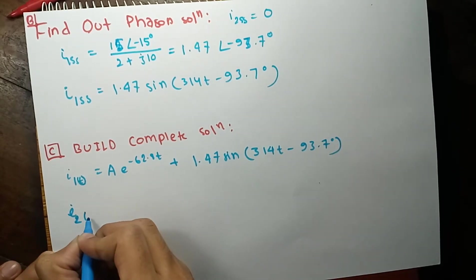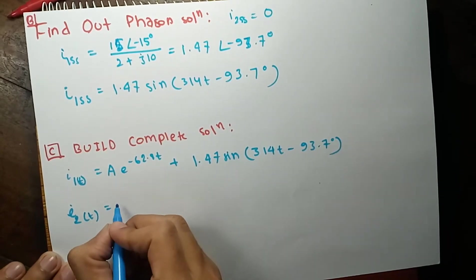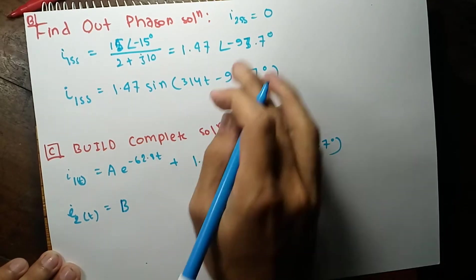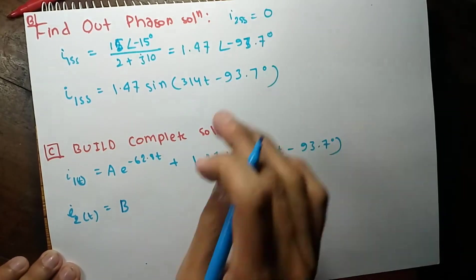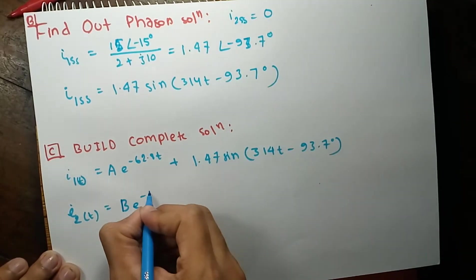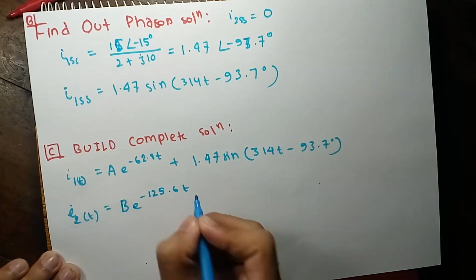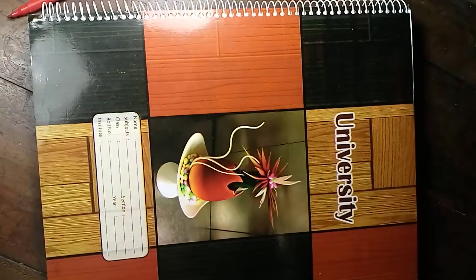The second current will have only a transient portion. Remember, its steady-state portion is 0. So I2(t) = B·e^(−125.6t).